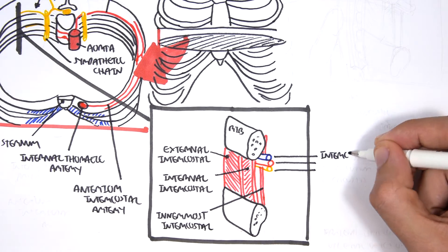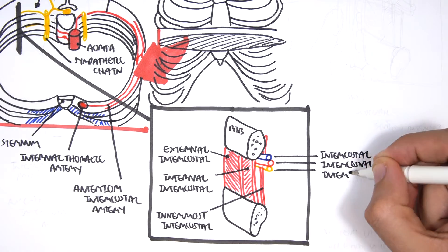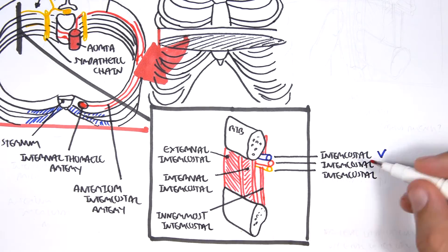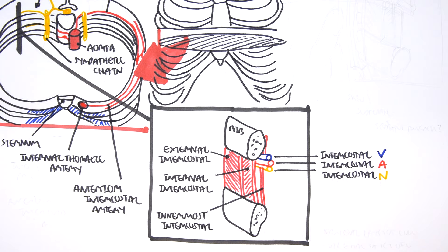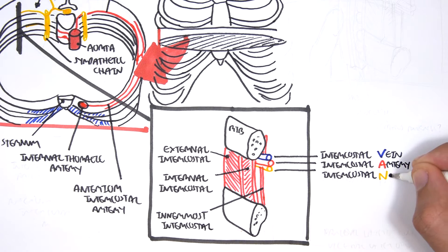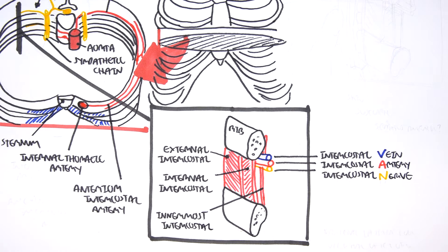And so all here, these are all the intercostal neurovascular bundle. And we can remember it as VAN. And this is the order we find it in. So we have vein right below the rib, then we have the artery, then we have the nerve. So the nerve is the most unprotected out of the lot because it's the most exposed.